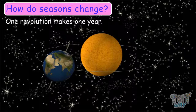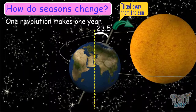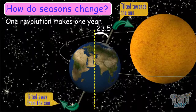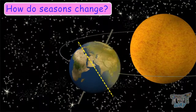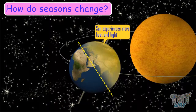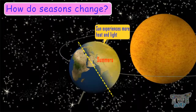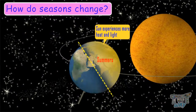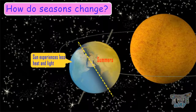The Earth is slightly tilted on its axis. One portion of the Earth is tilted towards the sun, and one away from the sun. The portion that is tilted towards the sun experiences more heat and light, and we say it's summers there. The portion which is tilted away from the sun experiences less heat and light, and we say it's winters there.